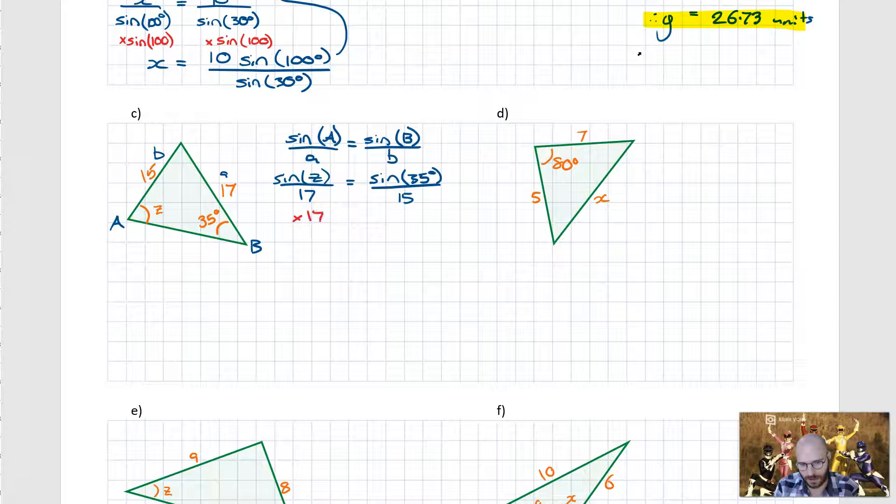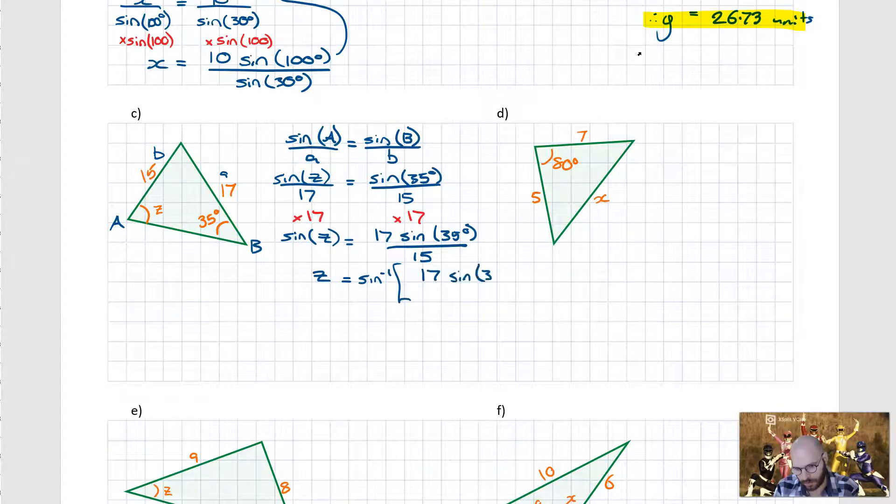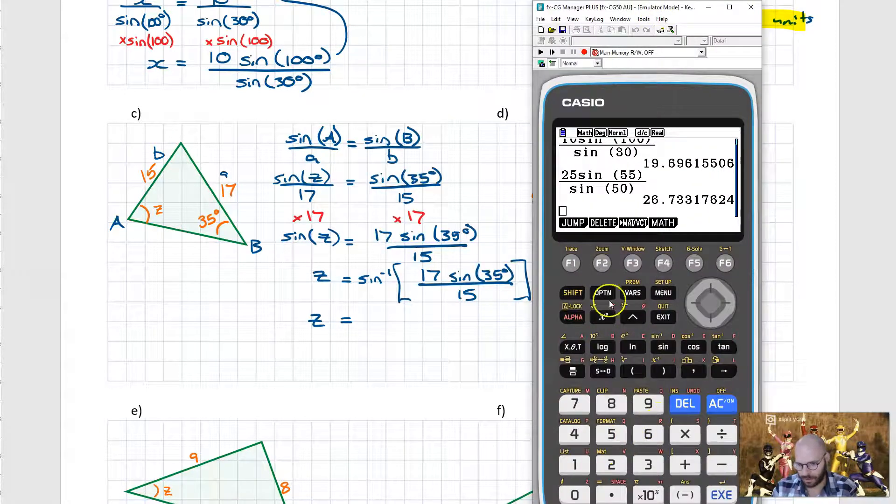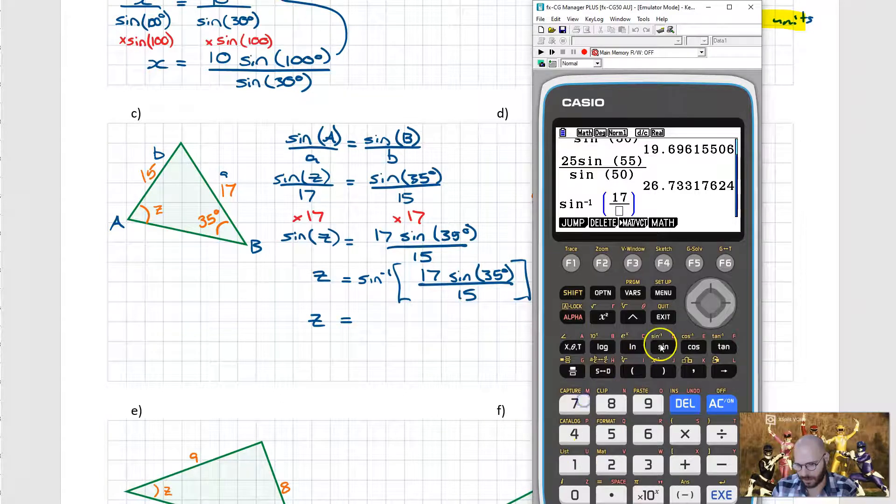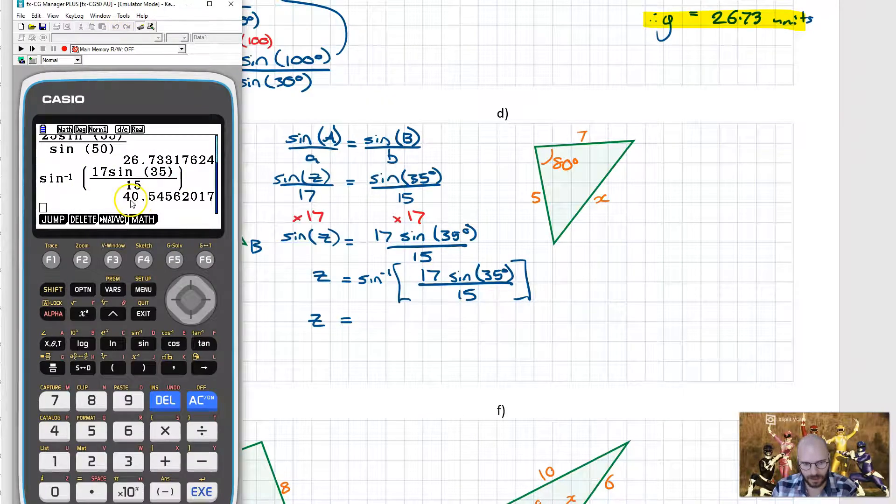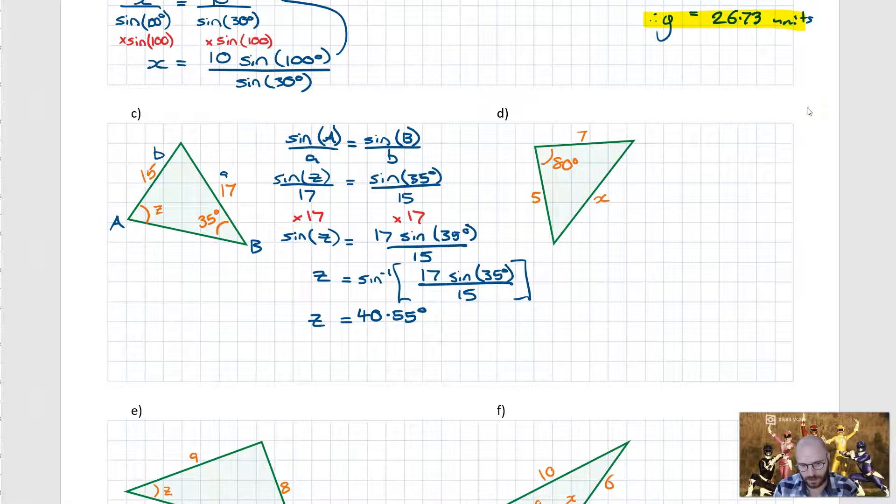Now I multiply both sides by 17. This will give me sine of Z is equal to 17 sine 35 degrees all over 15. Then I'm going to take the inverse sine of both sides. So Z will equal the inverse sine of 17 sine 35 degrees all over 15. I'm going to write shift sine then inside of brackets I'm going to do fraction 17 sine 35 then downstairs we have a 15, hit execute and it comes out to be roughly 40.5456 or 40.55 degrees. So it's important to remember this is an angle so it's measured in degrees.